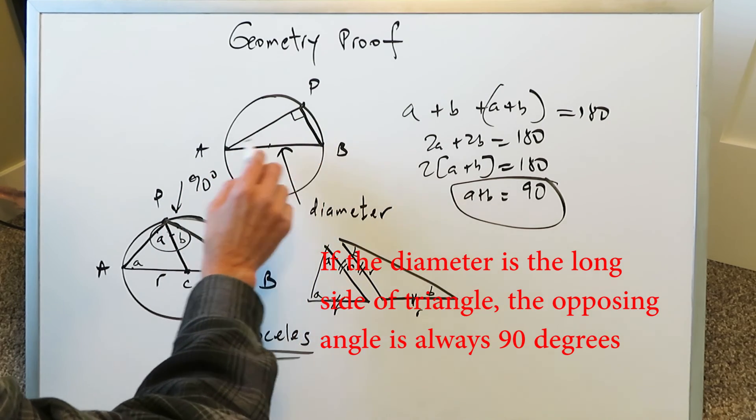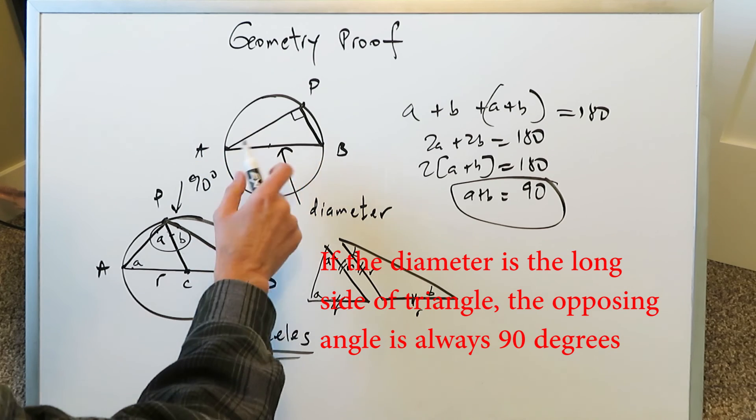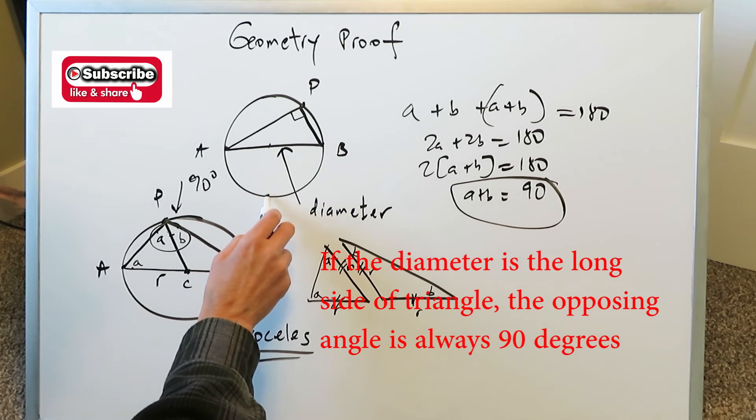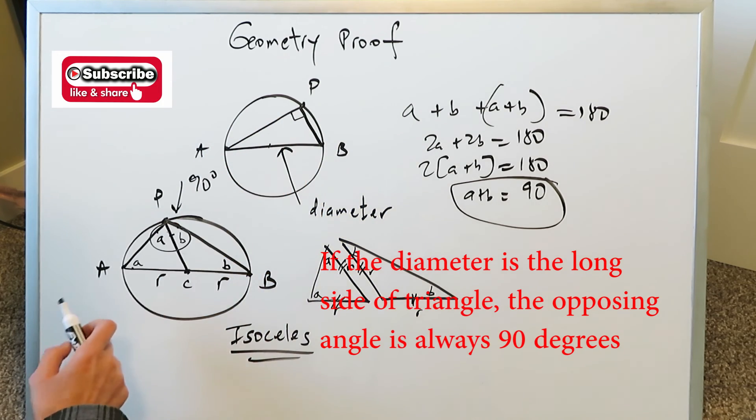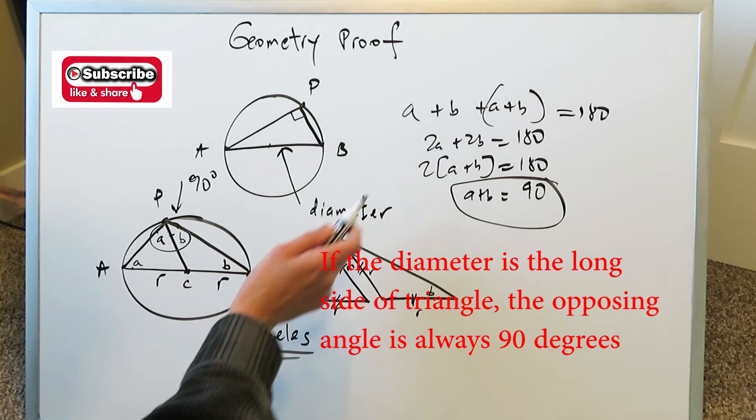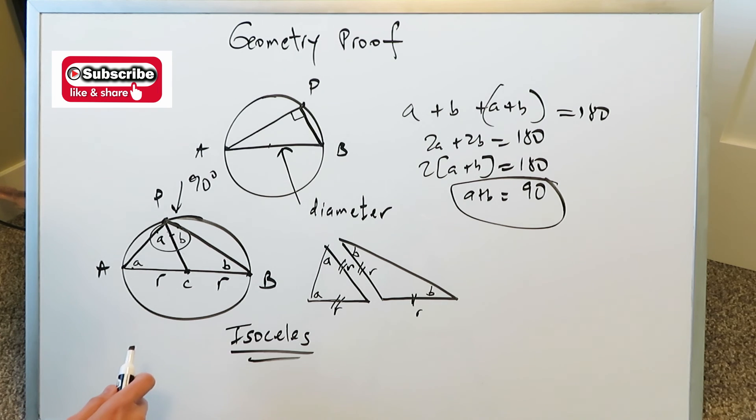If you have a diameter, let's call that diameter AB, and you connect the diameter with the third point anywhere on that circle, you generate a triangle. That third angle that you've generated will always be 90 degrees, and we've shown it to be the case. And it's 90 degrees because when you draw this extra line here, an extra radius, you essentially form two isosceles triangles, and then you know we have two equal sides, two equal angles, and we go from there.